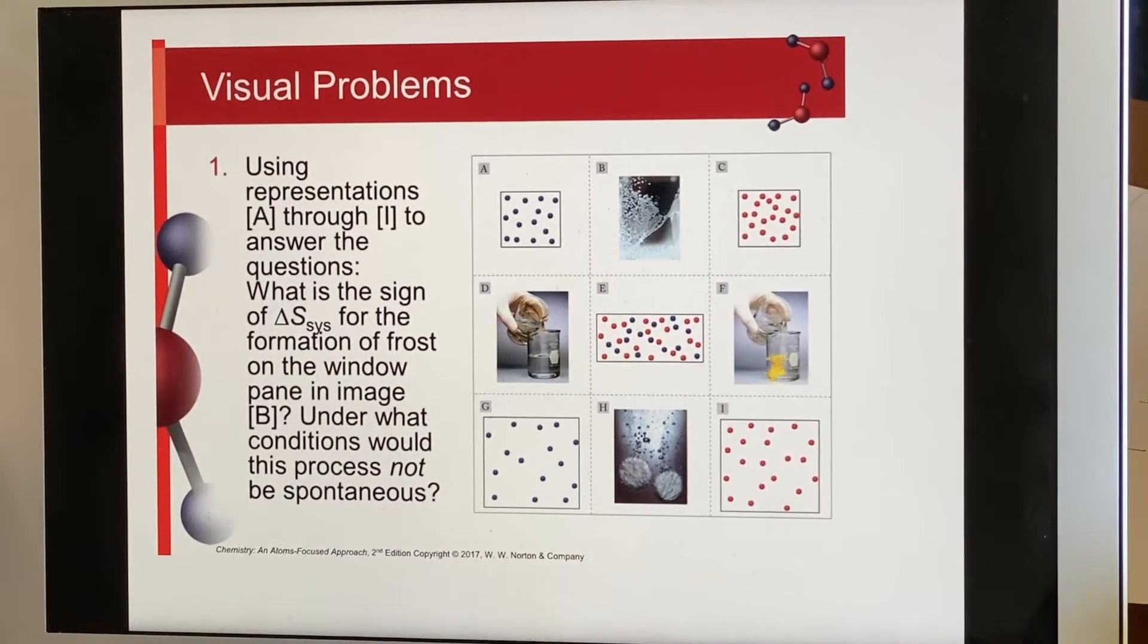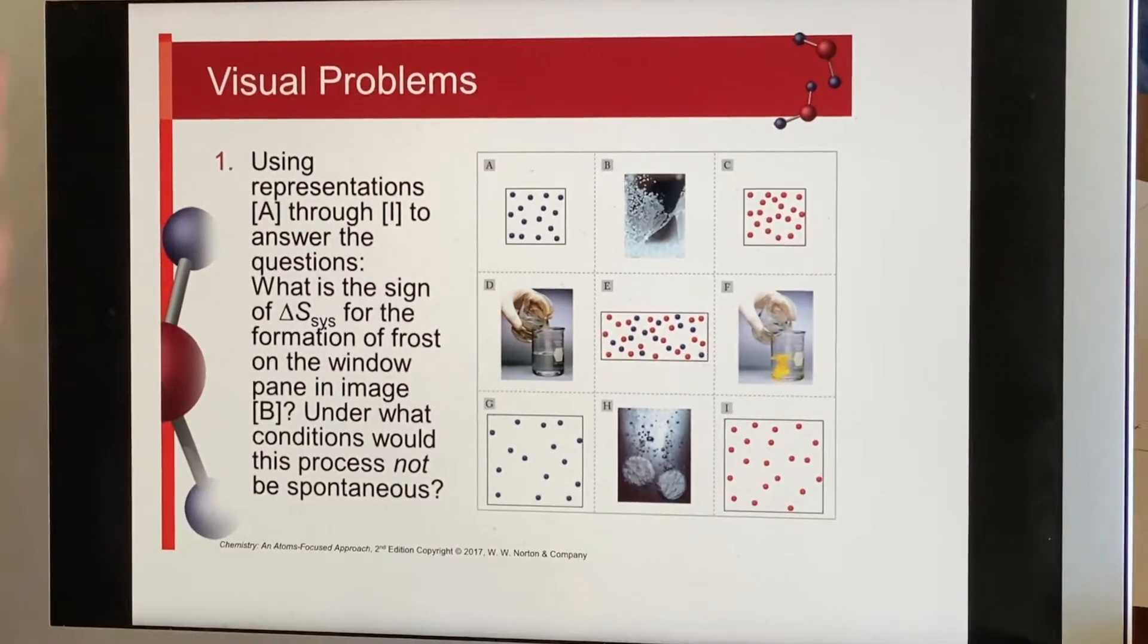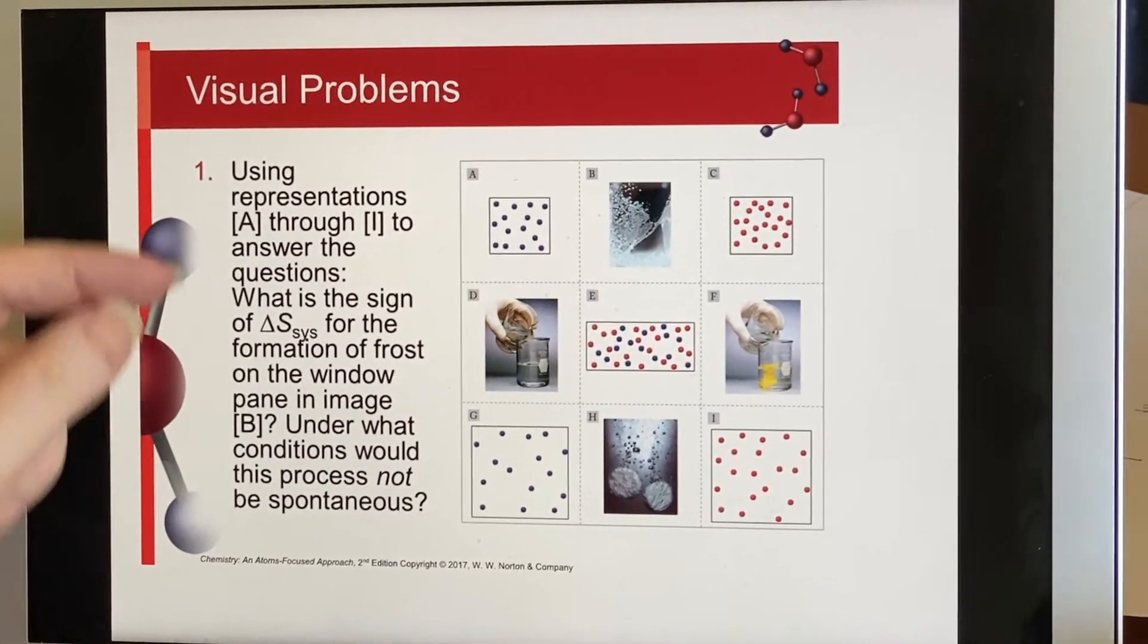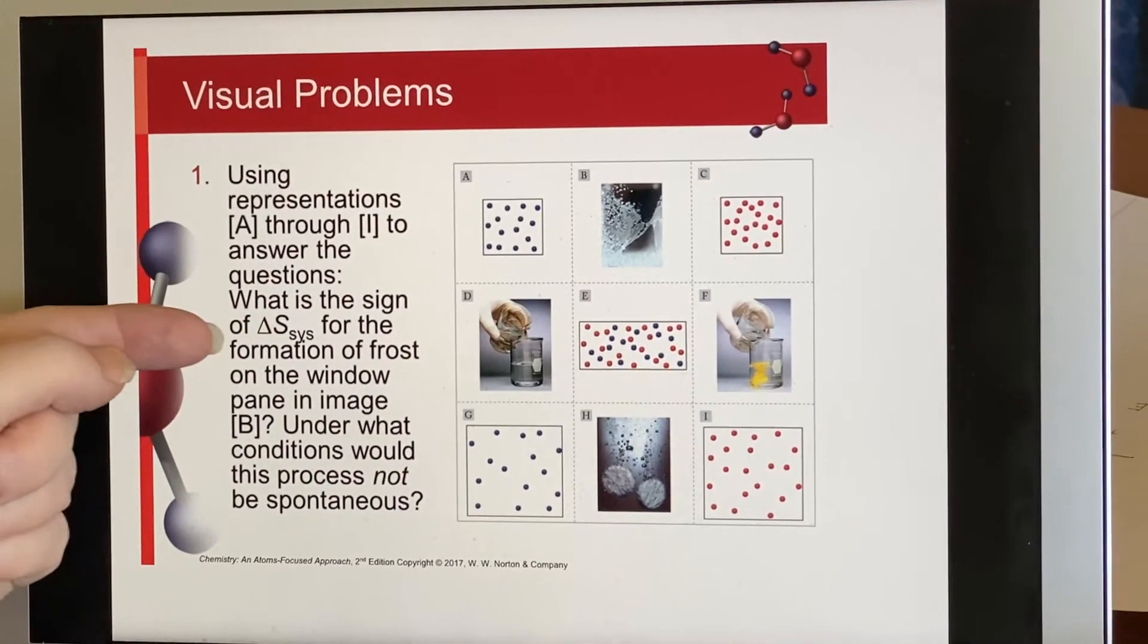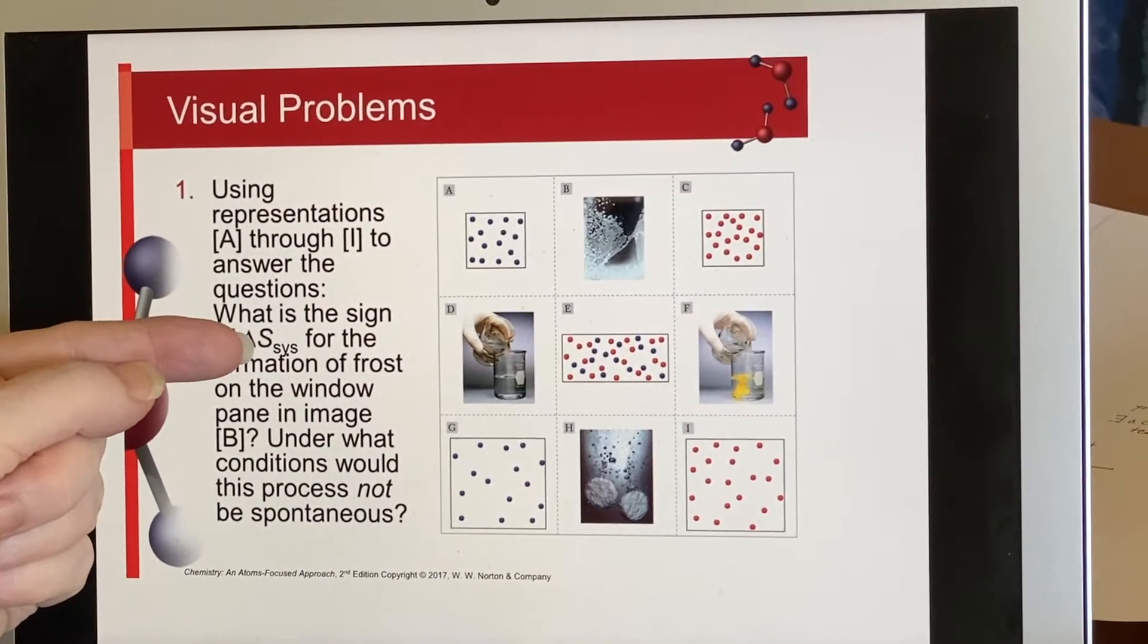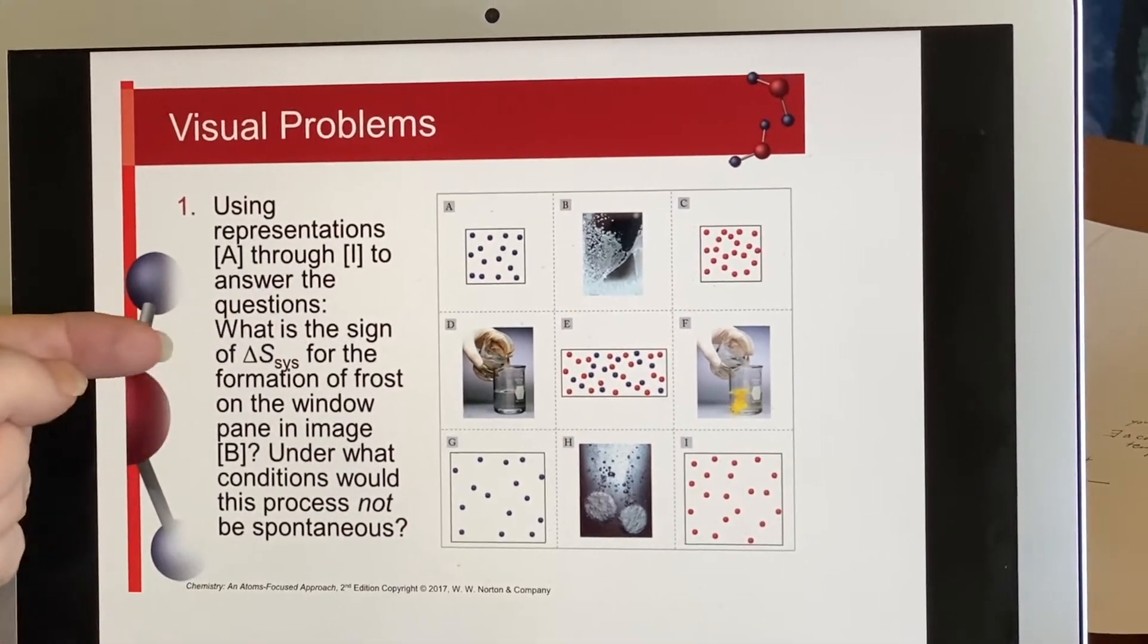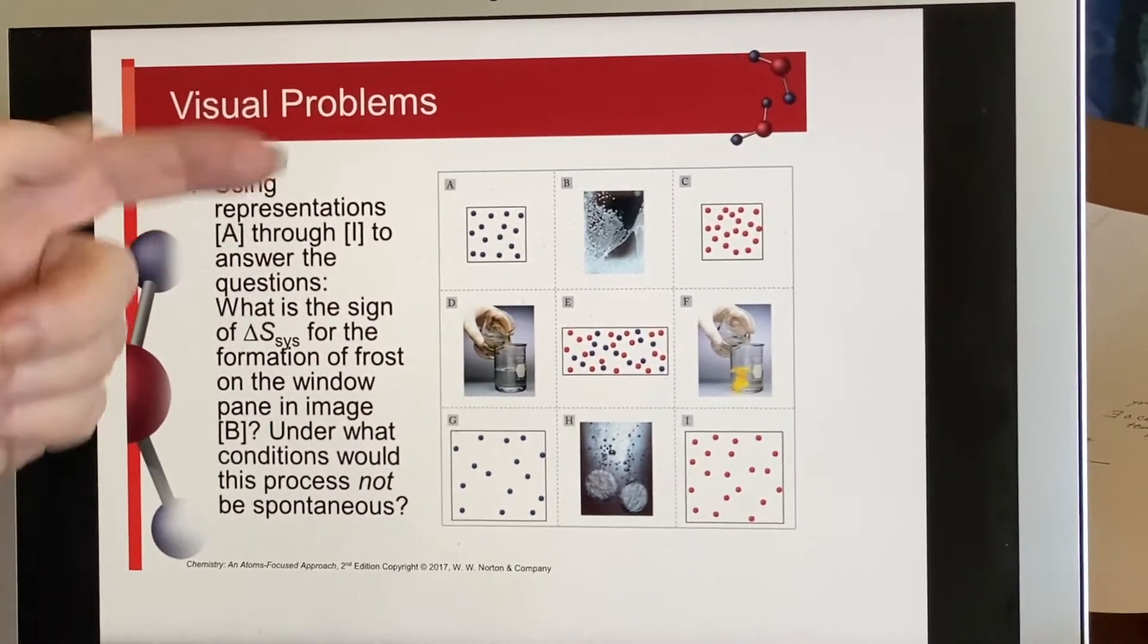So just as a little bit of a review, we have the visual problems and the first one is talking about what's the sign of Delta S for the system and for the formation of frost on the window pane in image B.